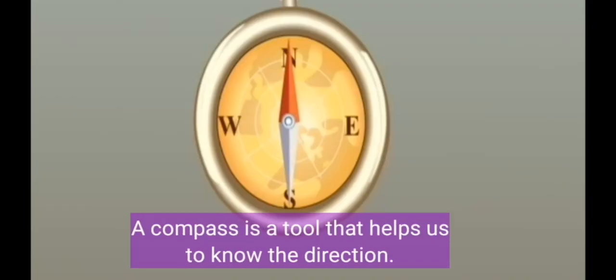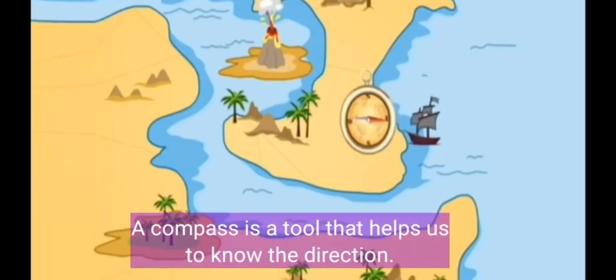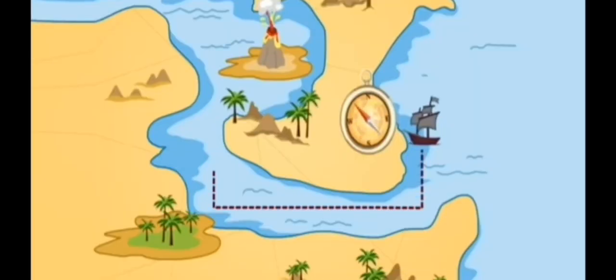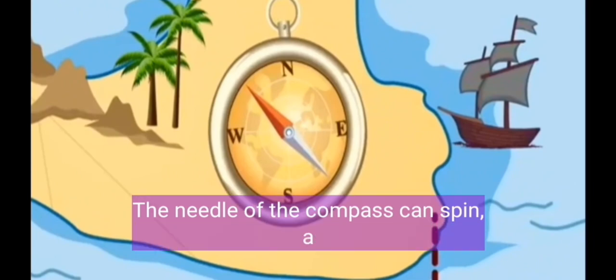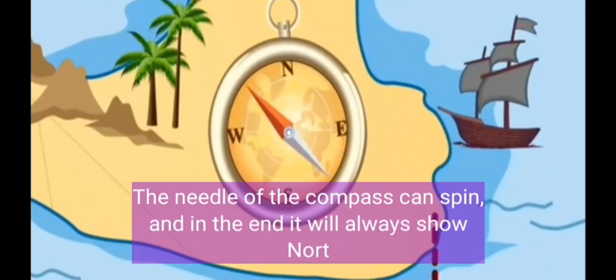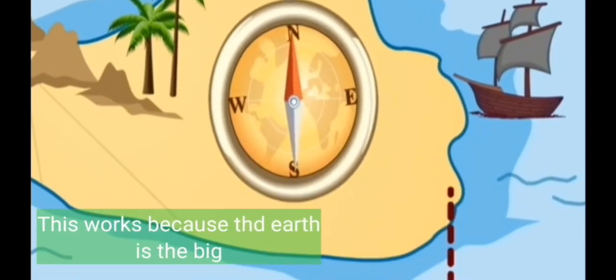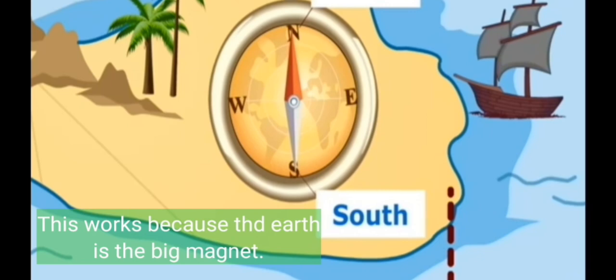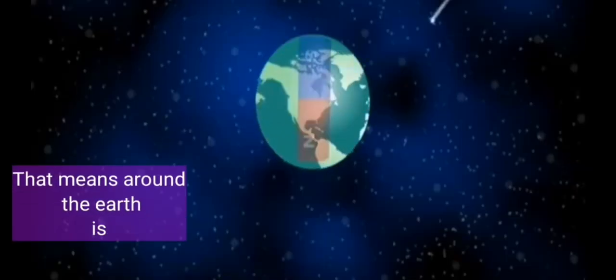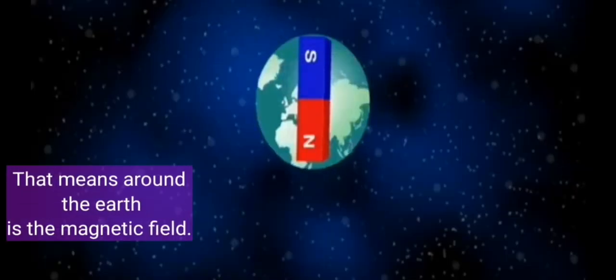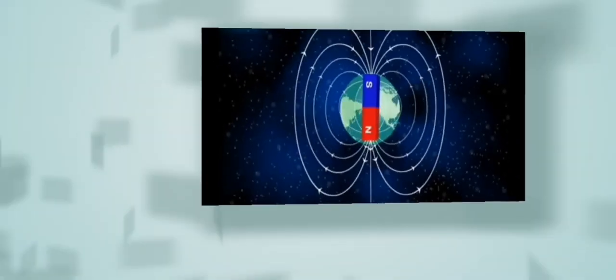This is a compass. It is a tool that helps us to know the direction. You can try to take a look at your own compass. The needle of the compass can spin, and in the end it will always show north and south direction. This works because the Earth is a big magnet, which means around the Earth is